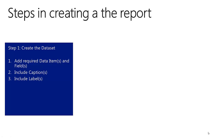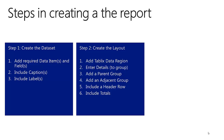The first step was to create the dataset in the report. We have seen how to add the required data items and fields, include the required captions and labels. The next step is to create the layout of the report in Visual Studio. We will start by adding a TableX data region into the body of the report and enter the details that need to be grouped. Next we will add a parent group and an adjacent group in the matrix. Then we will include a header row and include totals.